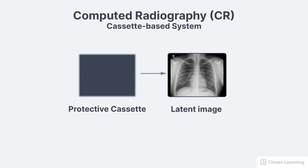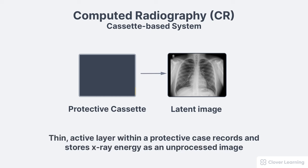Computed radiography, or CR, is a form of digital imaging that uses a cassette-based system, similar in many ways to conventional film-based radiography. A thin, active layer within a protective cassette records and stores the X-ray energy as an unprocessed image, much like the film in traditional radiography when exposed to X-ray photons.